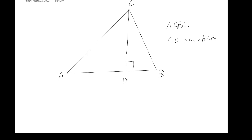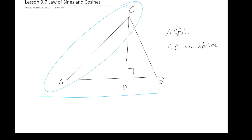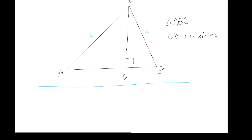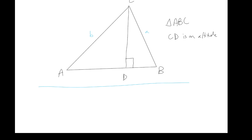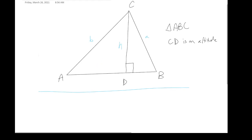So here we go. We have triangle ABC where CD is listed as an altitude. Let's consider big triangle ABC first. Side AC is opposite angle B, so lowercase b is another name for that side. We have side BC which is opposite angle A, so lowercase a is another name for it. I'm going to name CD lowercase h — that's going to be helpful for the algebra we're about to set up. Now we have two right triangles within our larger ordinary triangle.